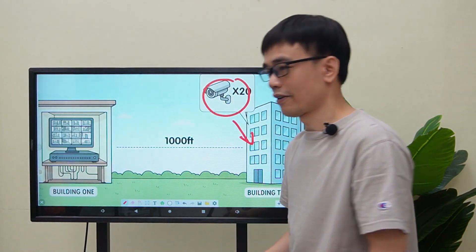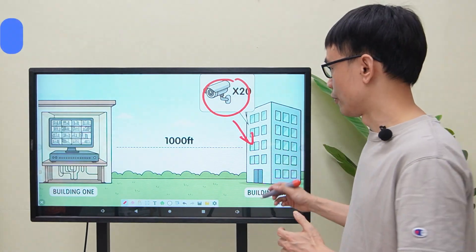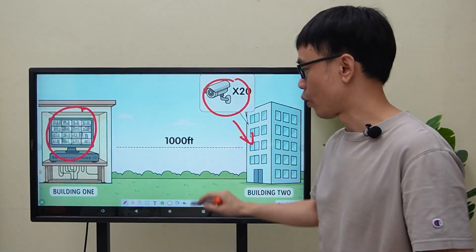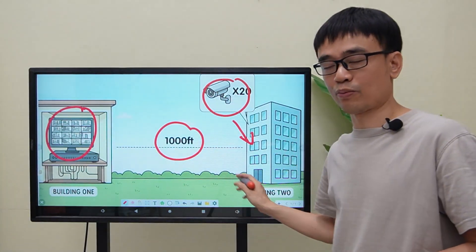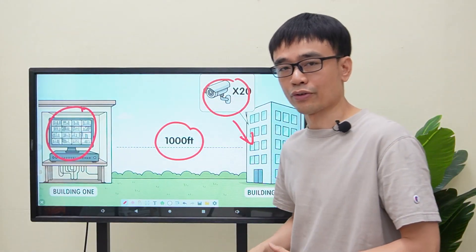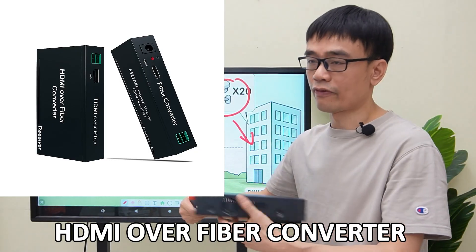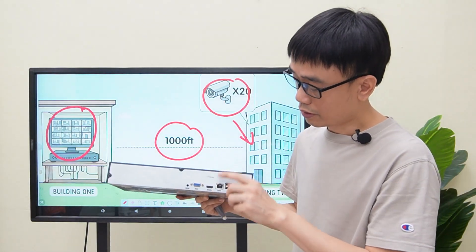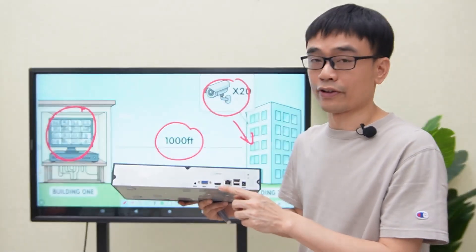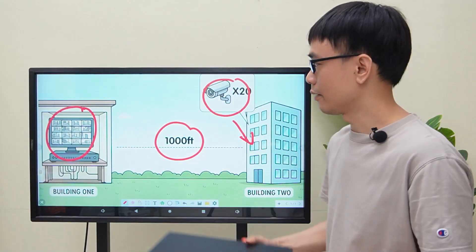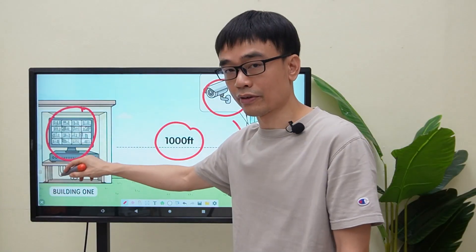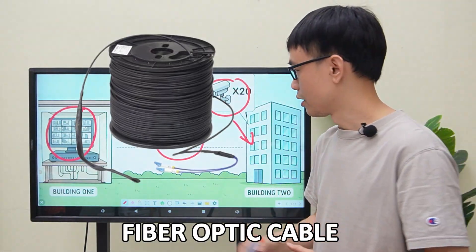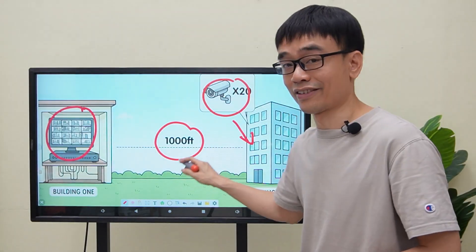But the owner gives him a challenge. He wants to preview all these 20 cameras in another building — it's about 1,000 feet between these two buildings. He plans to use an HDMI over fiber converter and connect that converter to the HDMI output of the network video recorder. Then he will have the live view in the second building. It works, since he is using fiber optic cable, which has no problem reaching this distance.